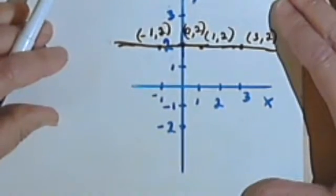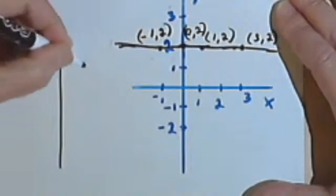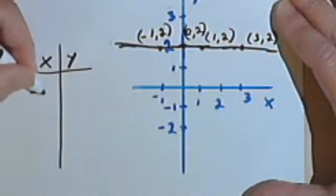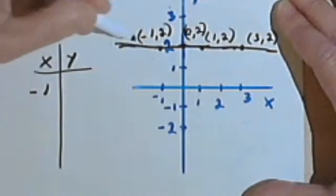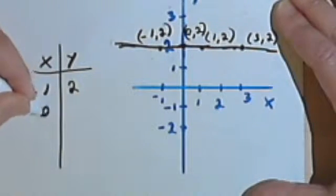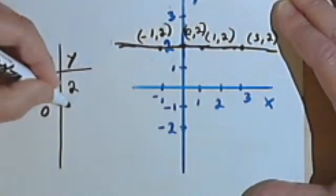Let's look at this from a point of view of a table of values. So I've got an x and a y, and let's look at negative 1. Well, when x is negative 1, y is 2. How about 0? Well, when x is 0, y is 2.